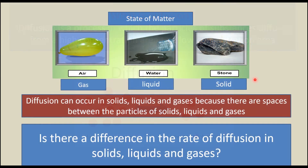Last lesson, you learned that matter exists in solid, liquid and gas. Diffusion can occur in solids, liquids and gases because there are spaces between the particles of solids, liquids and gases. Is there a difference in the rate of diffusion in solids, liquids and gases?